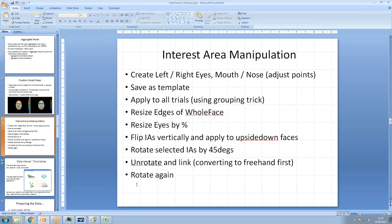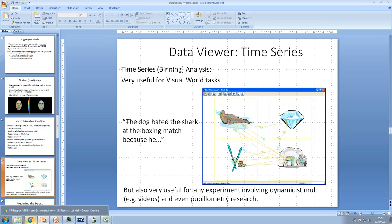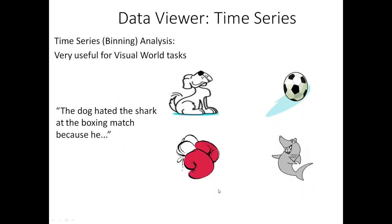In the last 20 minutes or so I'm going to talk about time series analyses. These are the type of report you need to do a statistical analysis on visual world type tasks, where you hear a sentence unfold over time. In this particular experiment, sentences were of the form 'The dog hated the shark at the boxing match because he...' and the experimenter was interested in where people were looking when they heard the word 'he', which at that point in sentence processing is ambiguous.